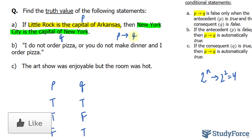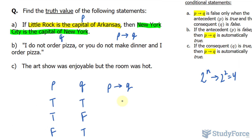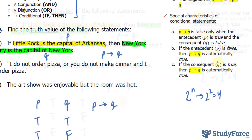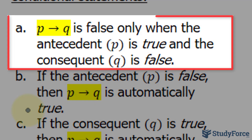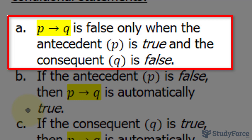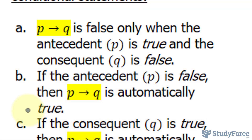The next column in your truth table should be if P then Q. Now when it comes to conditionals, you need to refer to the following, which tells us that the condition if P then Q is only false if and only if you have a scenario where the antecedent P is true and the consequent Q is false. That's the only time when the condition is false. Everything else is true, and that will be reflected in our example.